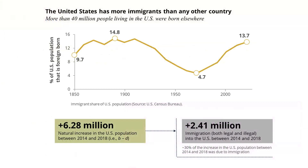Why is immigration so important? Let's look at the United States — we have more people coming in than any other country. I was lucky to immigrate here in 1994. This diagram shows the percent of the U.S. population that is foreign-born. Around the turn of the century it was about 15%, by the 1970s it dropped to less than 5%, and now we're back up to 13.7%. The natural increase in U.S. population from 2014 to 2018 was 6.28 million, plus another 2.41 million through immigration — about 30% of population increase was due to immigration.